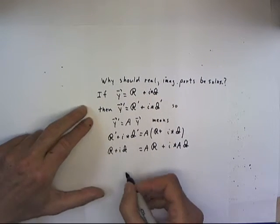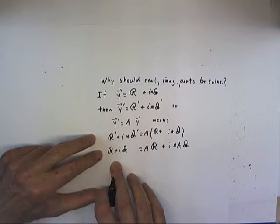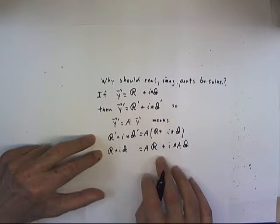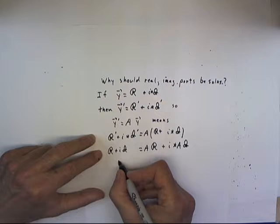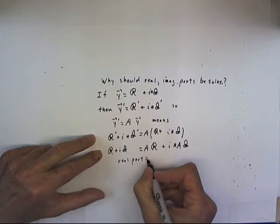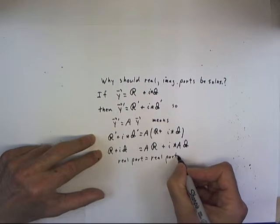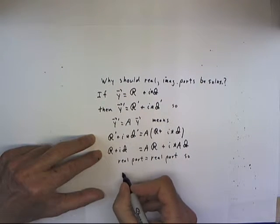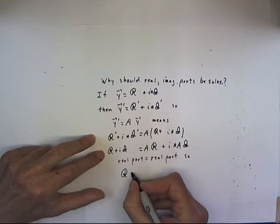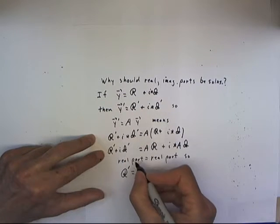But now, the real part of this complex expression has to equal the real part of this complex expression. So, the real part is equal to the real part, so the real part on this side is equal to, and that's, those are both derivatives,